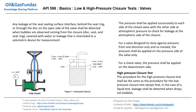We are going to discuss low and high pressure closer tests. Any leakage at the seat sealing surface, behind the seat ring, or through the disc on the open side of the valve shall be detected when bubbles are observed. The valve is closed on one side and open on the other side, and this is connected to a volumetric device where we can detect bubbling or drops to sense the leakage.